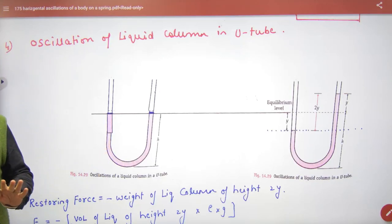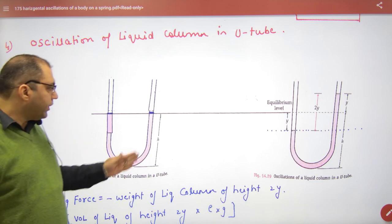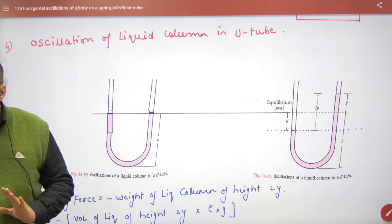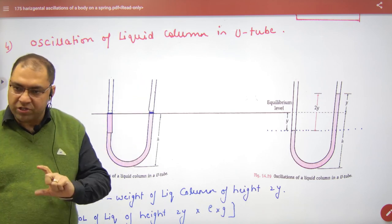Oscillation of liquid column in U-tube. Simple - take a tube in U-shape. In this, we have liquid at equilibrium at height h.